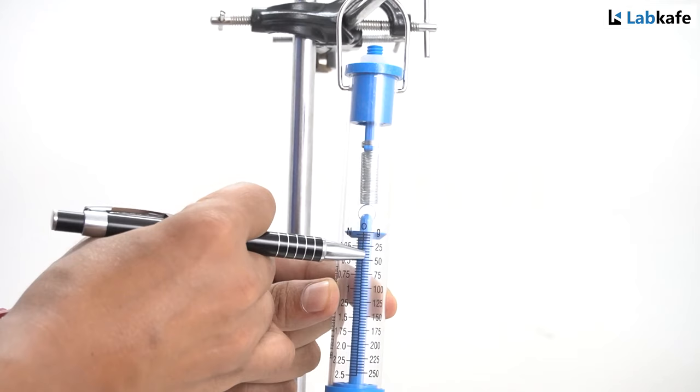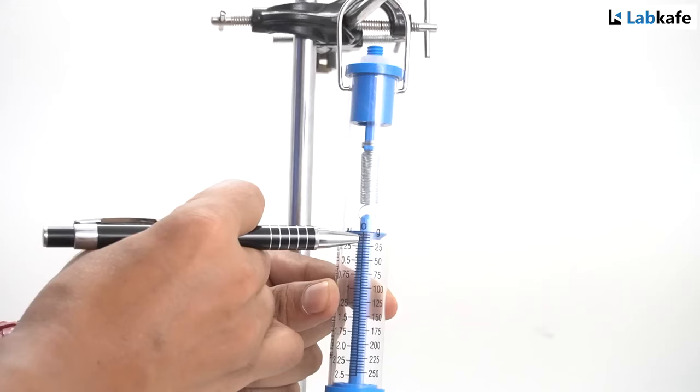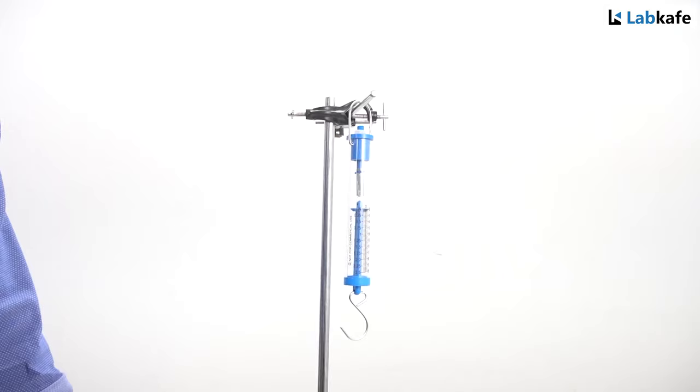As I can see that from zero to 25 grams there are five divisions, which means each of the divisions are equivalent to 5 grams and that is our least count. After the least count is calculated, I will measure the weight of the pan and the weight of the wooden block.